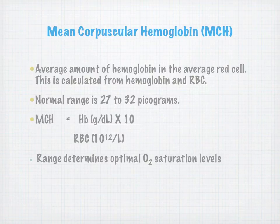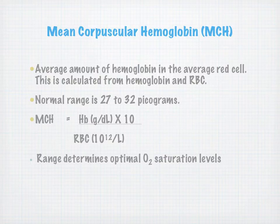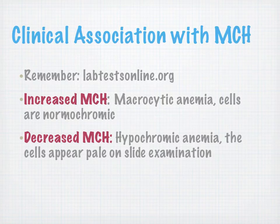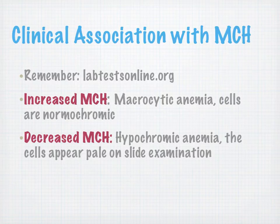Mean corpuscular hemoglobin (MCH) is the average amount of hemoglobin in the average red blood cell, calculated using the hemoglobin and red blood cell count. For clinical associations, remember to visit labtestsonline.org. Increased MCH is seen in macrocytic anemia where cells are normochromic. Decreased MCH is seen in hypochromic anemia, where cells appear pale on slide examination.